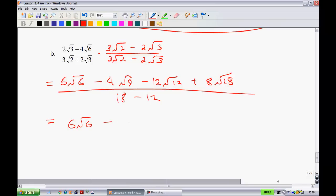I now have 6 root 6 minus, 4 root 9 is just a 12, minus 12. I'll change this to be 4 times 3 and then we'll simplify that. Plus 8, and this will be a 9 times 2, all over 6.